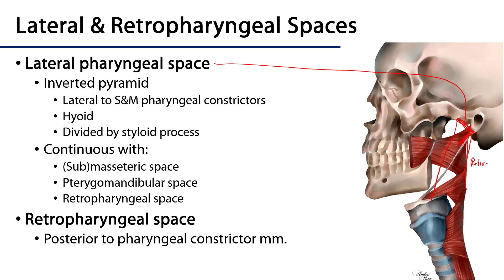Here is the stylohyoid ligament coming down, so there's an anterior portion and a posterior portion to the lateral pharyngeal space. This lateral pharyngeal space is contiguous with other fascial spaces — in particular there's a submasseteric space (sometimes just called the masseteric space by clinicians) and there's also a trigomandibular space.